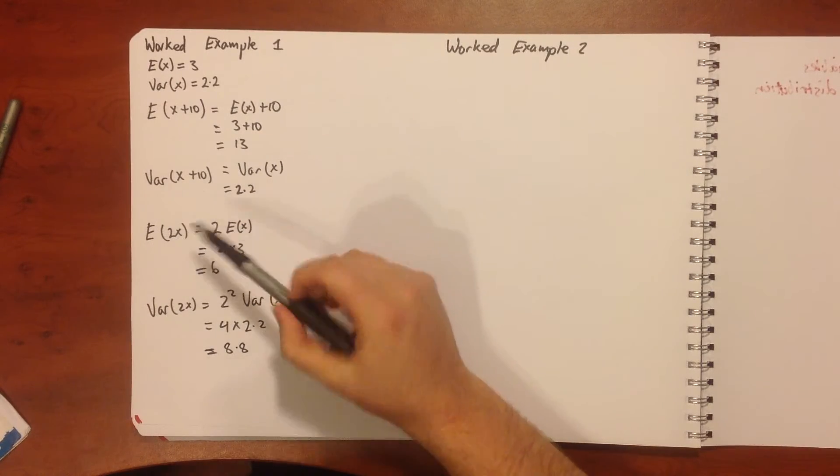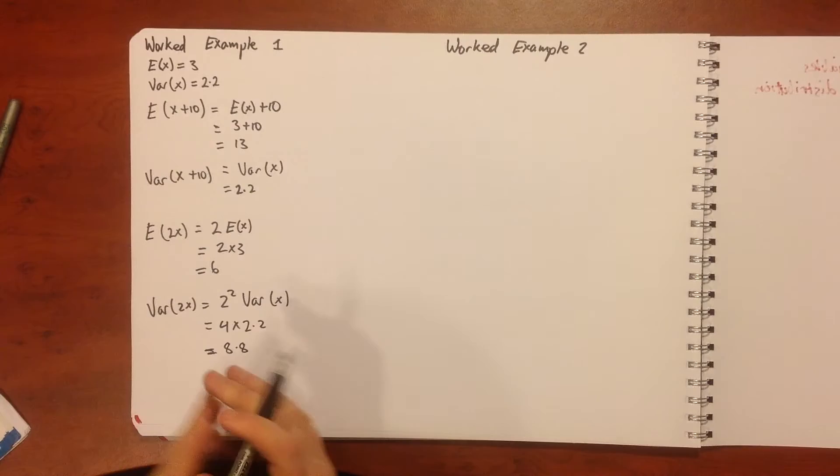That also makes sense because we're multiplying all of our x values by 2, which means our bigger ones compared to our smaller ones are going to be a lot bigger. They're going to have increased by more than our smaller ones have, so our variance or the difference between them or how they vary is going to increase.